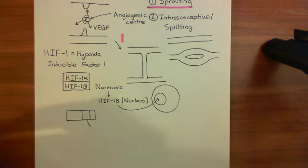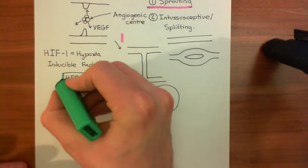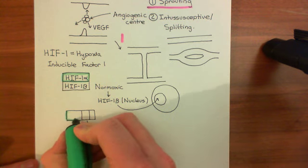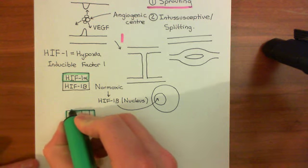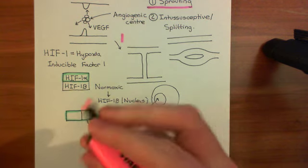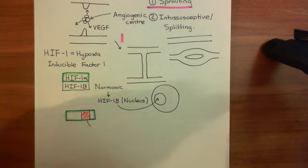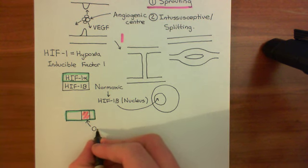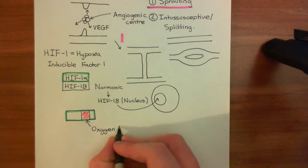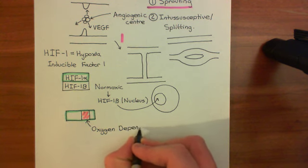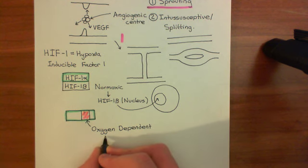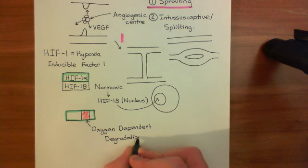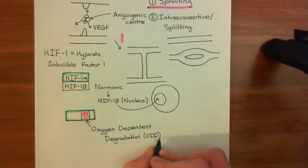I'm going to colour in the HIF-1 alpha protein in green. The special domain shown in red is the oxygen-dependent degradation domain. The oxygen-dependent degradation domain is often abbreviated to the ODD domain.